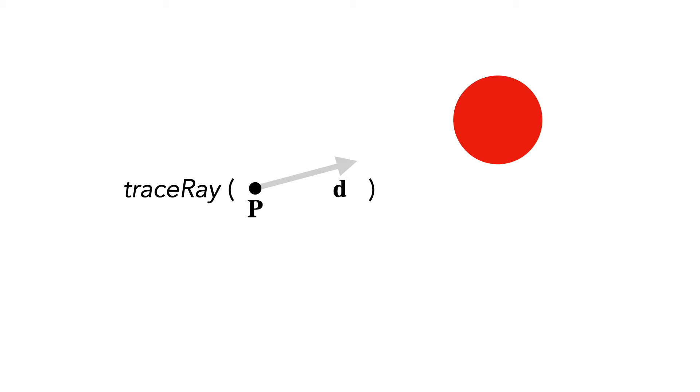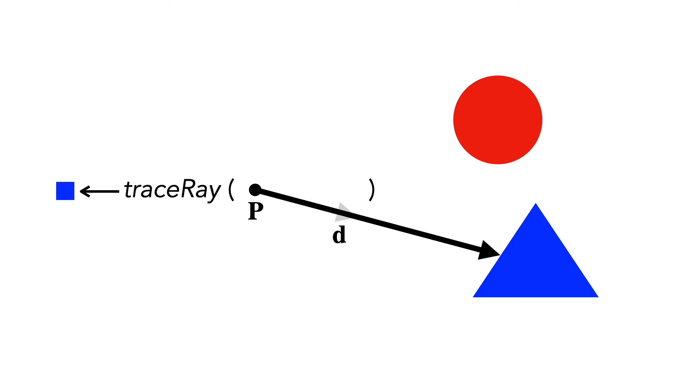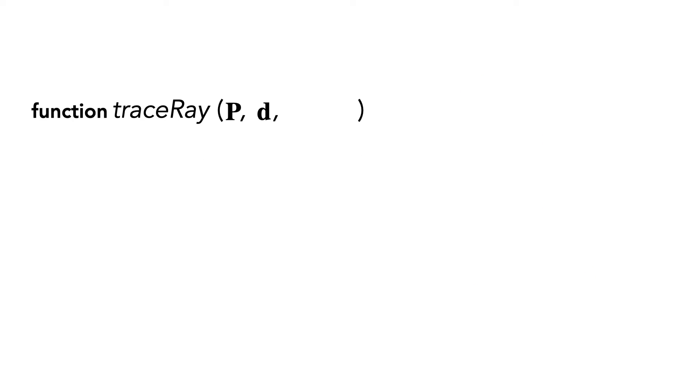Next let's define a function that returns the color of light seen along a ray. This function is the crux of the ray tracer. In addition to the ray parameters p and d, this function needs to know where all the objects are in the scene.